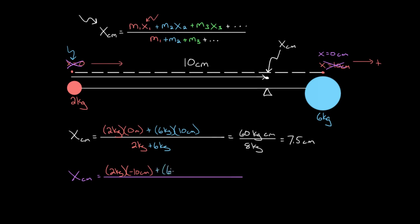Plus six kilograms times, now the location of the six kilogram mass is zero, using this convention, and we divide by both of the masses added up. So that's still two kilograms plus six kilograms. And what are we gonna get?